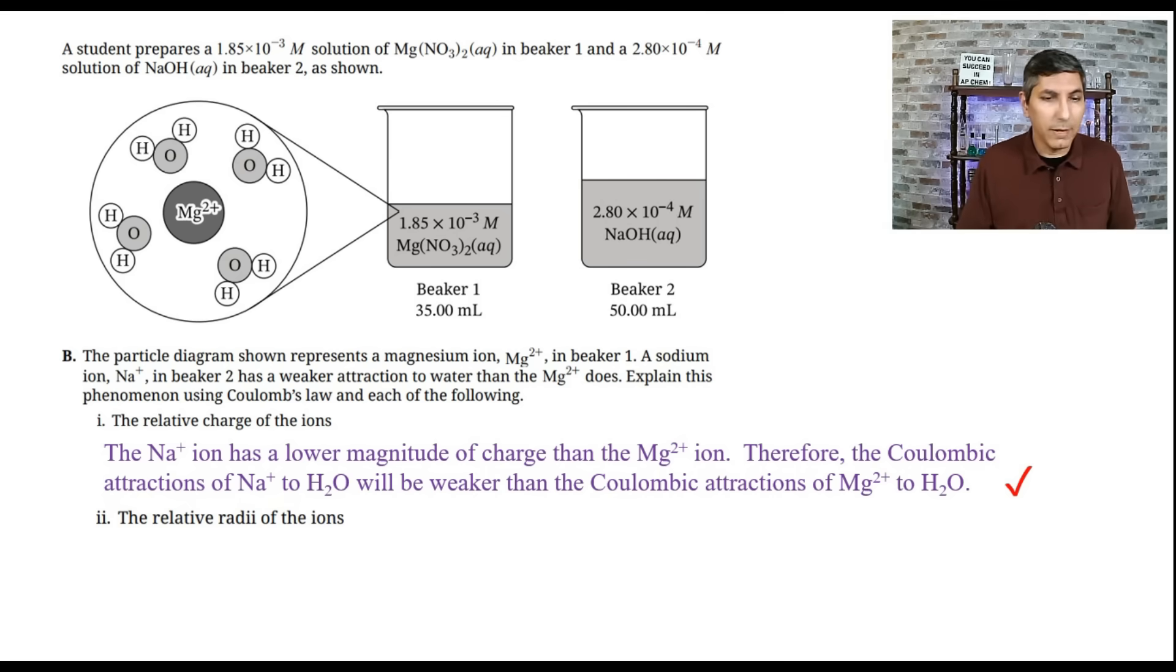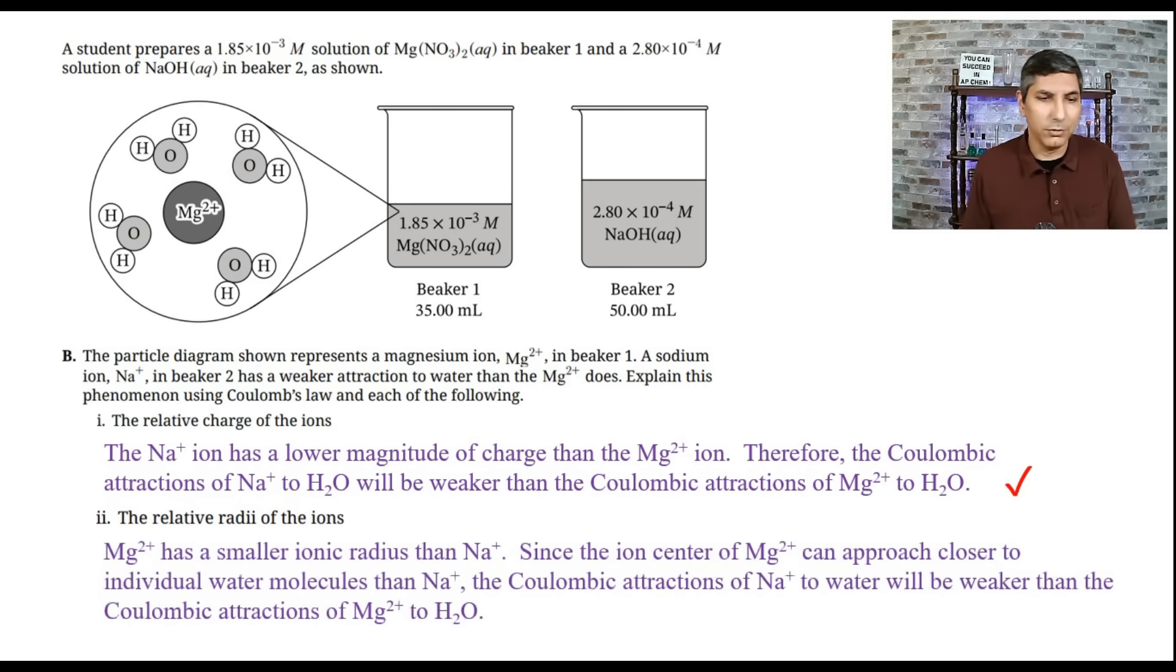The next part here, part two, talks about the relative radii of the ions. Well, we have to think about this in terms, of course, the relative atomic radii of those two ions. So magnesium 2+ has a smaller ionic radius than sodium plus. Those are both isoelectronic ions. And so we know that the one that has the more positive charge is going to have the smaller ionic radius. So since the ion centers of those magnesium ions can get closer or approach closer to the individual water molecules than sodium ions can, that tells us that the Coulombic attractions of sodium ions to water are going to be weaker than the Coulombic attractions of magnesium ions to water. So if you said something like that, once again, give yourself a point for that one as well.